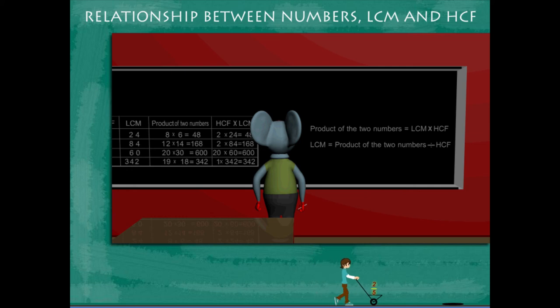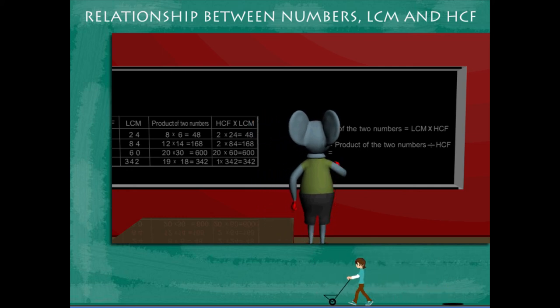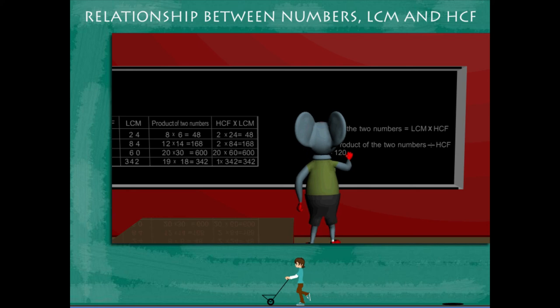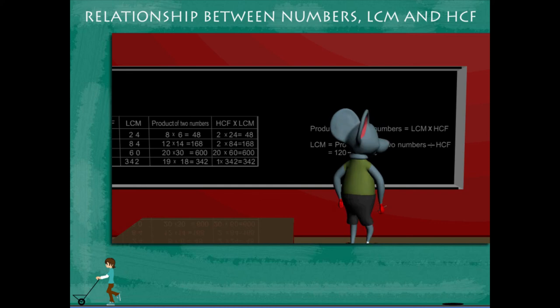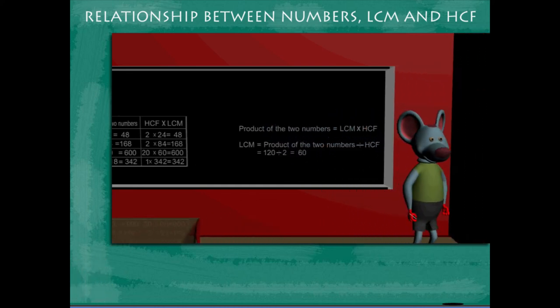Taking an example, Toby shows if the product of two numbers is 120 and the HCF is 2, then the LCM will be 60. Good show Toby!